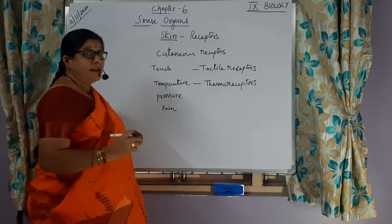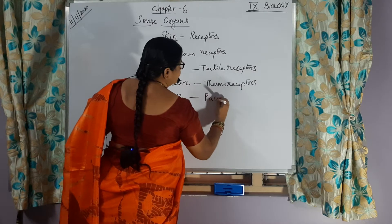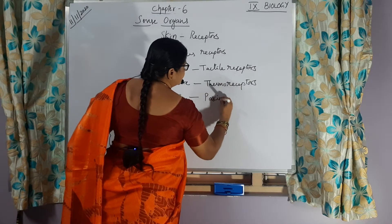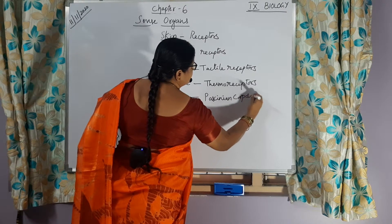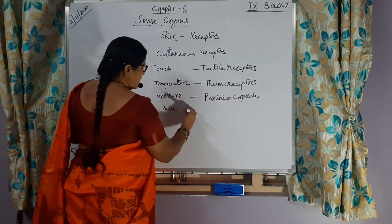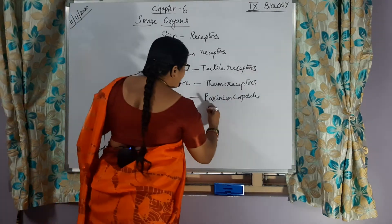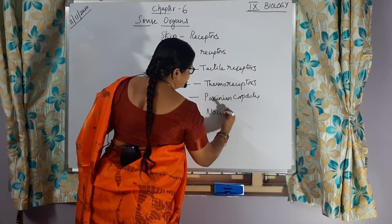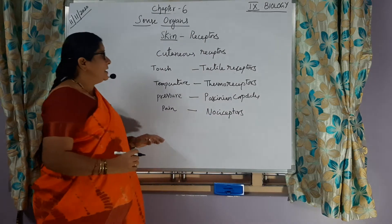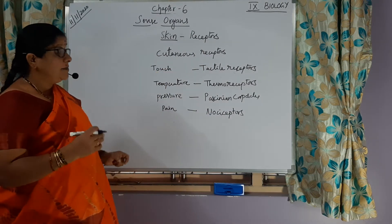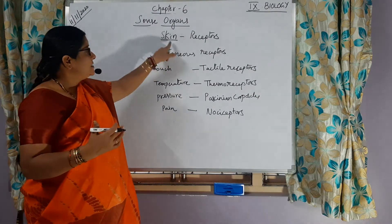Thermoreceptors help us identify temperature. We can also feel pressure — that is because of pacinian corpuscles. And we can feel pain, which is because of nociceptors. So different types of receptors help in identifying the different types of senses present in the skin.